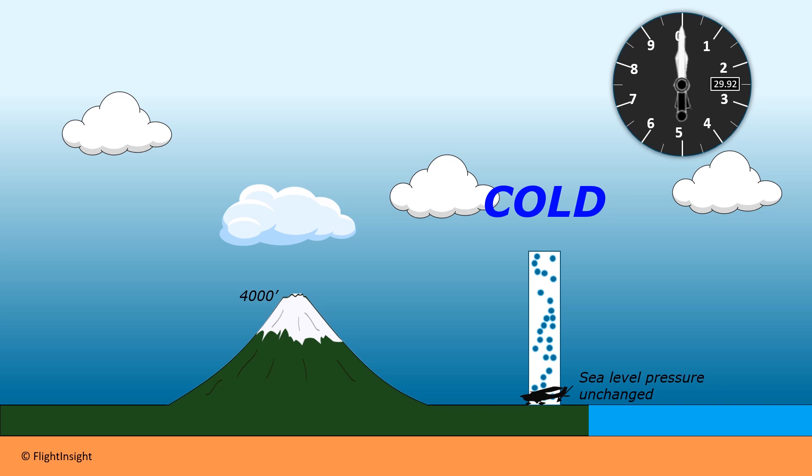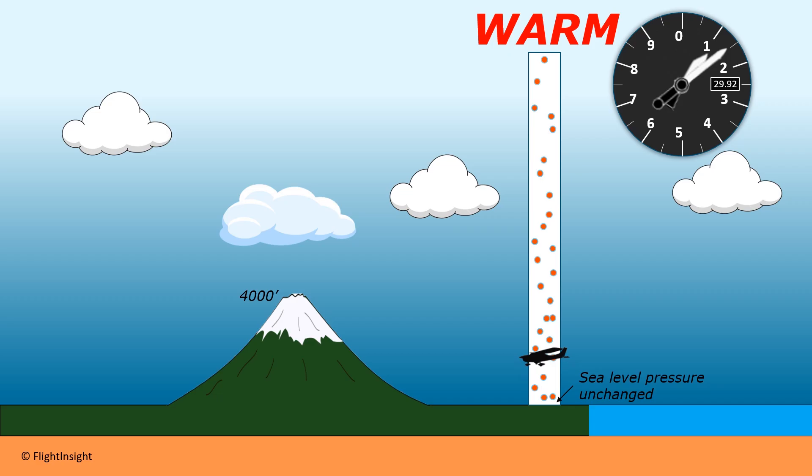So what happens when we're in warmer than standard temps, like it said in the test question? We climb to a true altitude of 4,000, but now, with more air molecules above us, denser air, the altimeter thinks we're lower. So to maintain 4,000 on the altimeter, we climb. Our true altitude increases. This is why the answer to this problem is that true altitude increases.